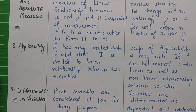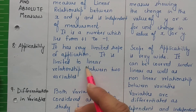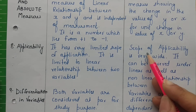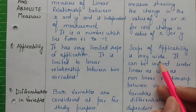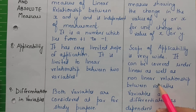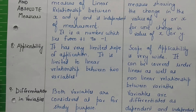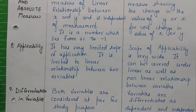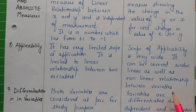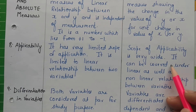Applicability: Correlation has a very limited scope of application — it is limited only to the linear relationship between two variables. But the applicability and scope of regression is wider. It can cover both linear as well as non-linear relationships between variables. Even where the relationship is not linear, the regression equation can be put in a linear form, making it applicable to non-linear relationships as well.